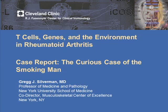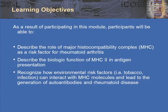Hello. I'm Dr. Greg Silverman, professor of medicine and pathology at the New York University School of Medicine and co-director of the Musculoskeletal Center of Excellence, and I welcome you to our case report, The Curious Case of the Smoking Man. This is part of our greater program on T-cells, genes, and the environment in rheumatoid arthritis, which is brought to you by the Cleveland Clinic R.J. Fastenmeyer Center for Clinical Immunology.